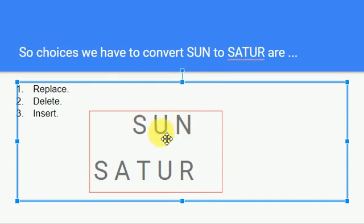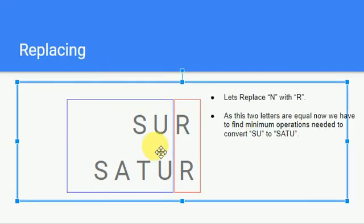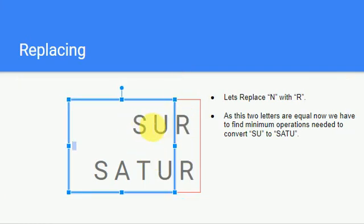We are trying to convert 'SUN' to 'SATUR'. For the replace operation, we replace N with R. Since these two characters are now equal, we then need to find the minimum number of operations to convert 'SU' to 'SATUR'. That is one option.